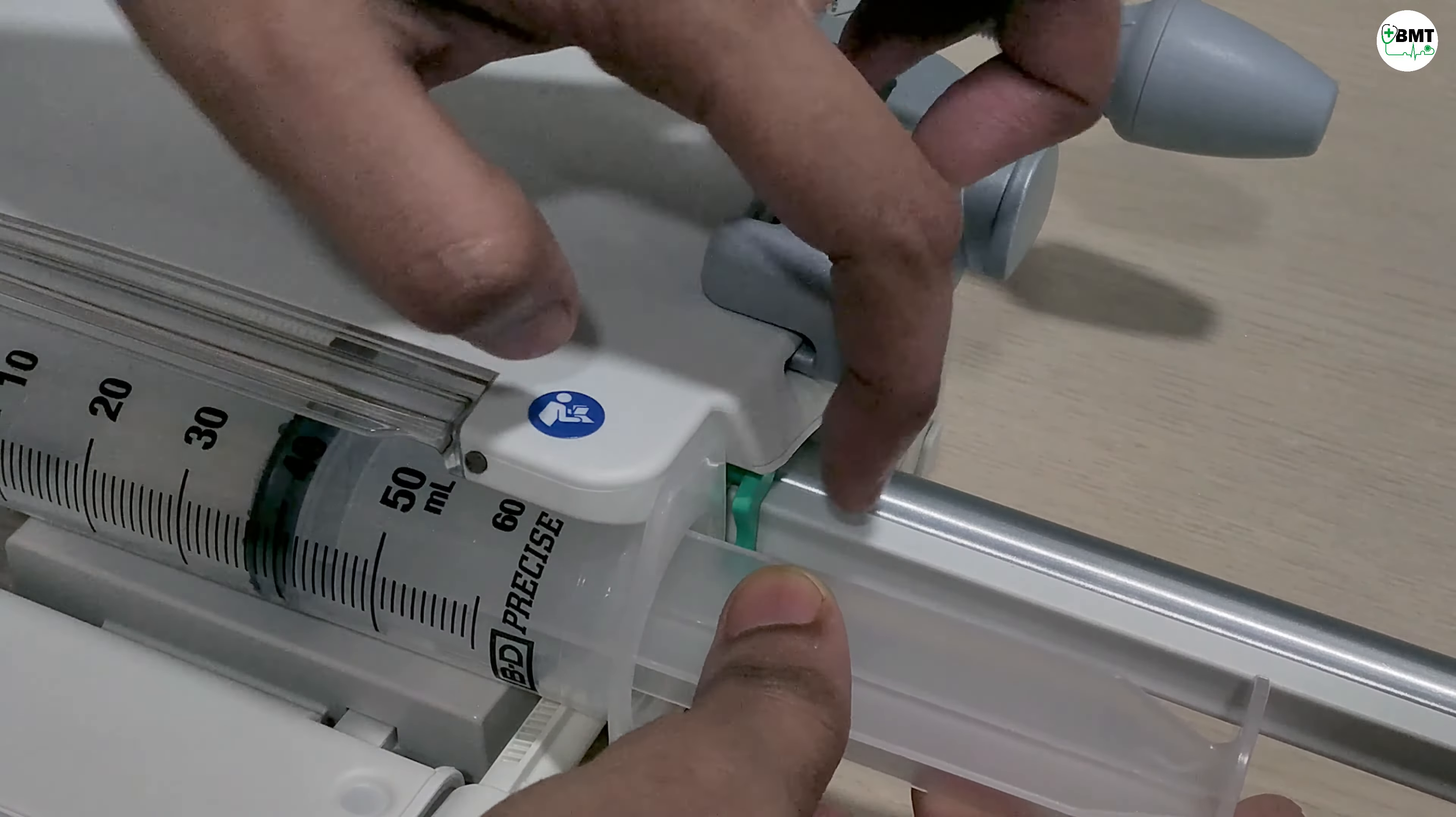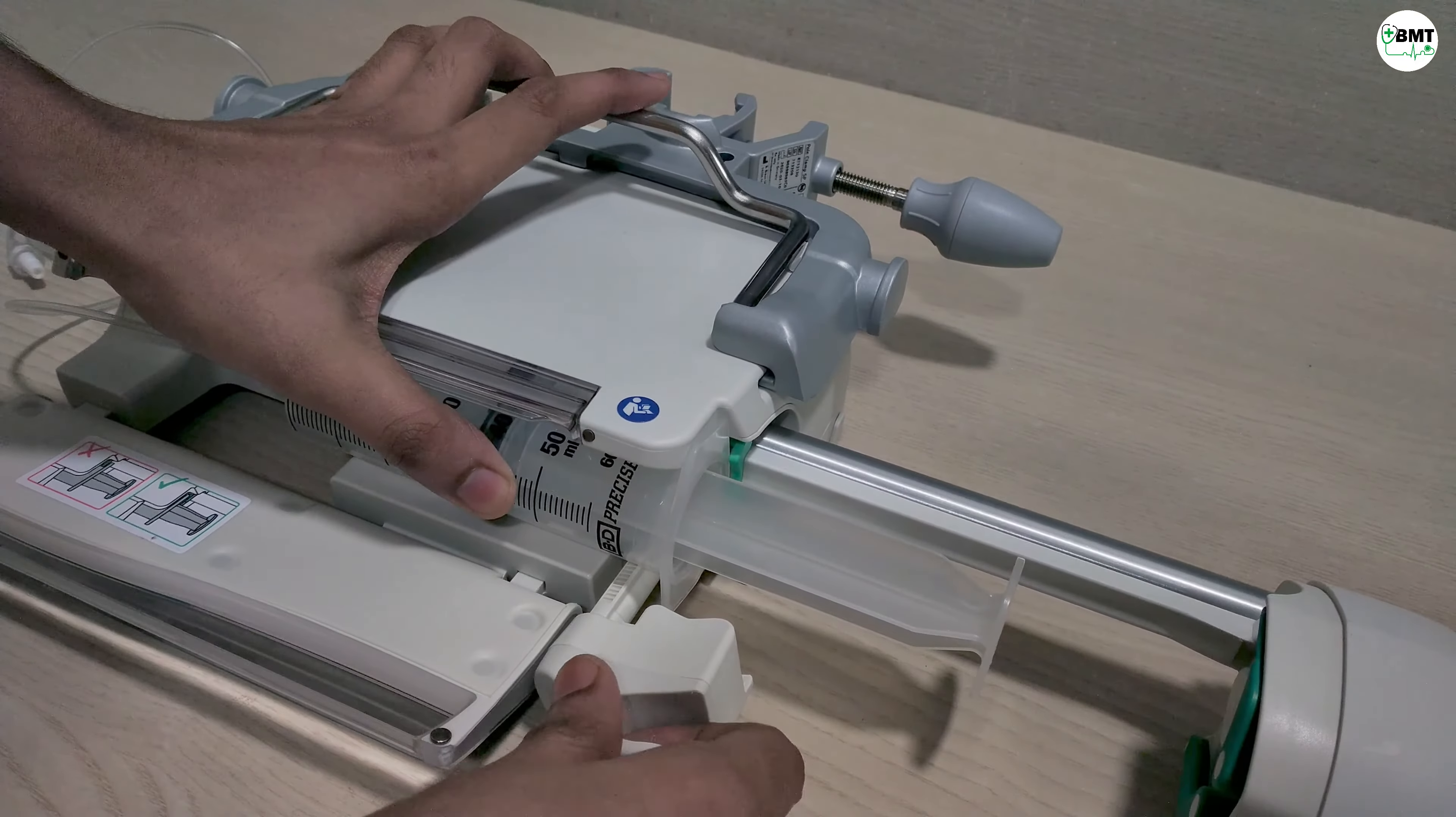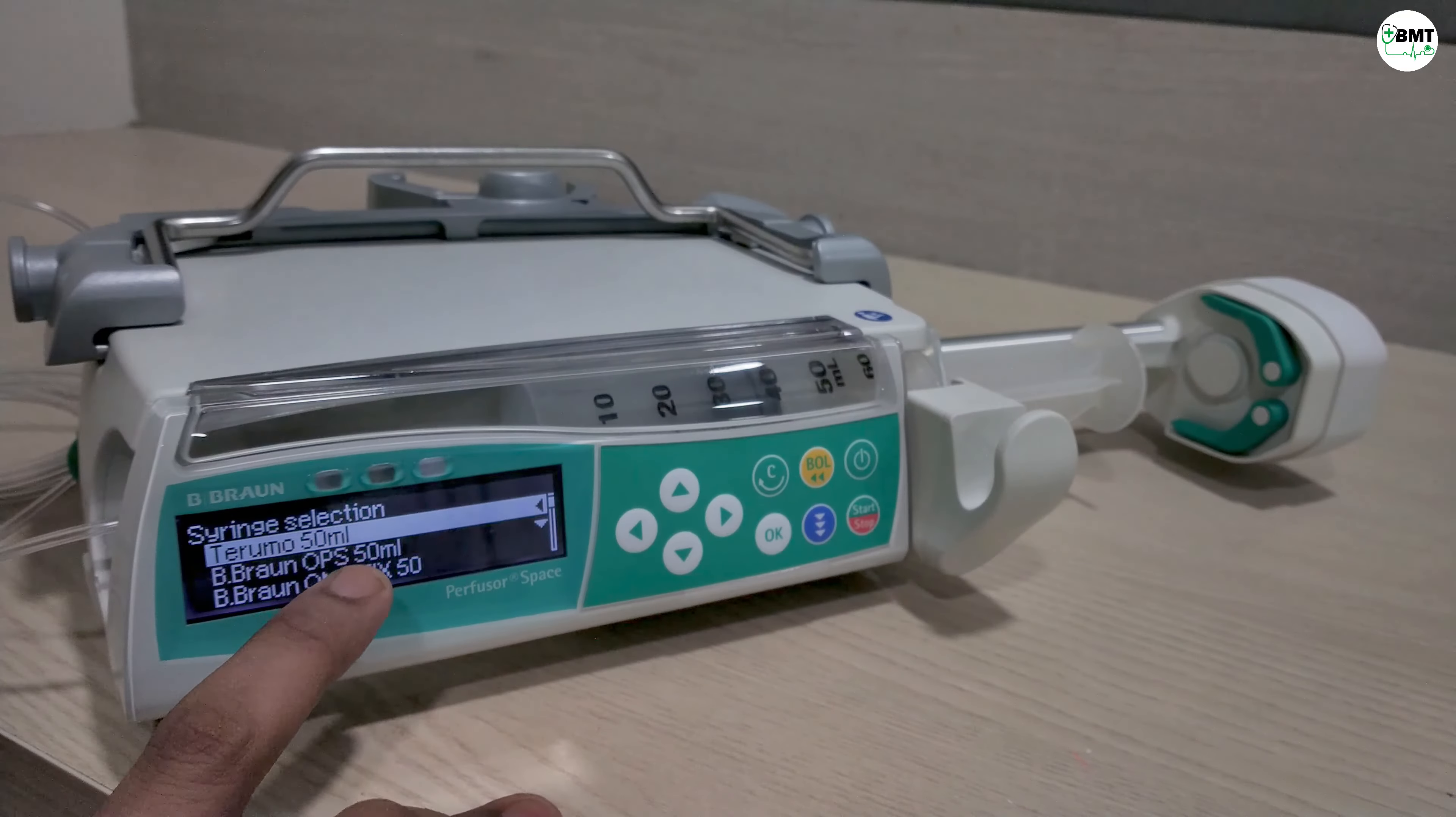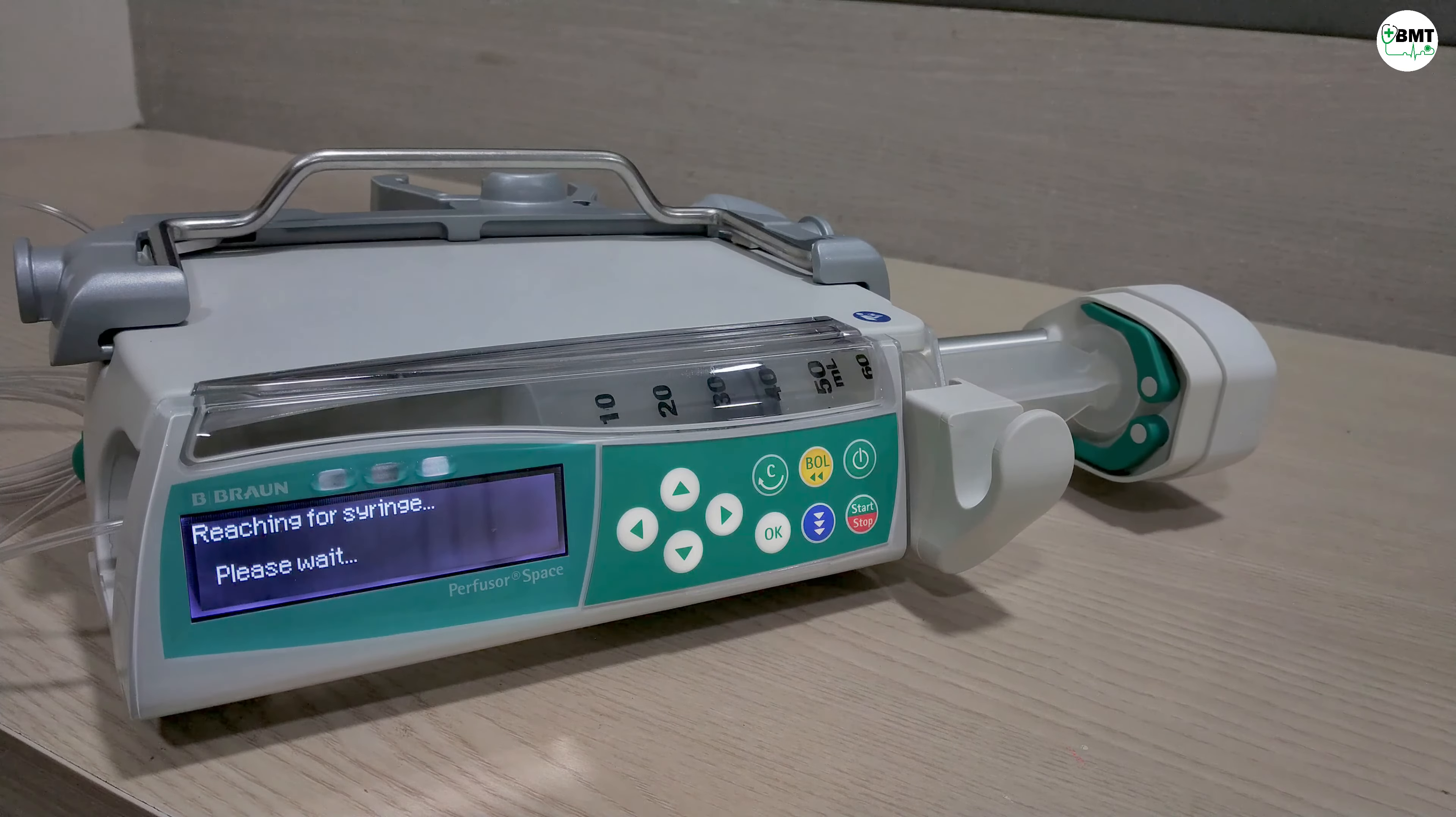This notch should be inside this. Then once placed, close. Select the syringe, then press OK. The syringe will then automatically get adjusted.